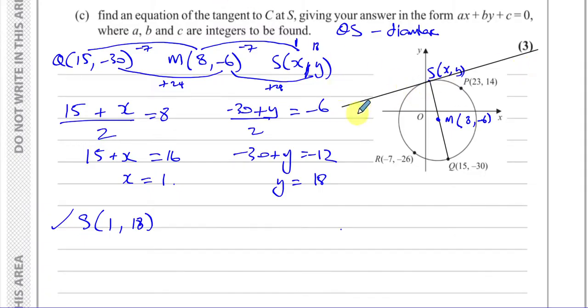So how do I find the gradient of the tangent? Well we also know that the tangent and the radius MS will always meet at right angles. If the tangent to the circle at S will meet the radius that joins the circle at S at right angles. So if I know the gradient of the line from M to S then I know the gradient of the tangent is going to be the negative reciprocal because they're perpendicular. So I know that the gradient of the line from MS is going to be the change in Y over the change in X. So the change in Y which is 18 minus -6 over 1 minus 8 which is 24 over -7. So therefore the gradient of the tangent is going to be the negative reciprocal. So it's going to be positive 7 over 24.